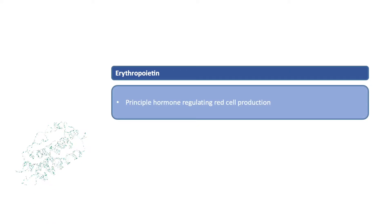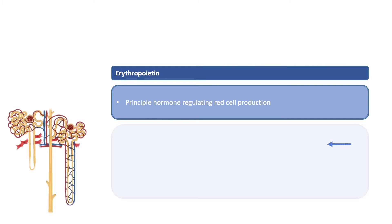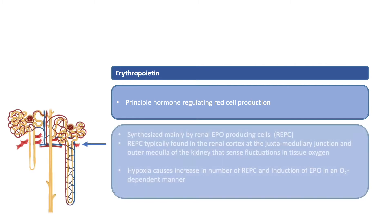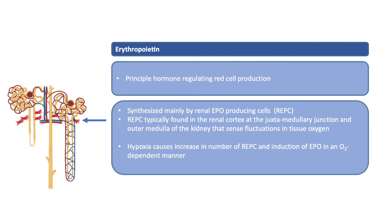Erythropoietin is the principal hormone that regulates erythropoiesis, especially in its later stages. The hormone is synthesized mainly by the fibroblast-like renal erythropoietin-producing cells. These erythropoietin-producing cells are typically found in the renal cortex, at the junction between the cortex and medulla of the kidney, or at the outer medulla of the kidney.